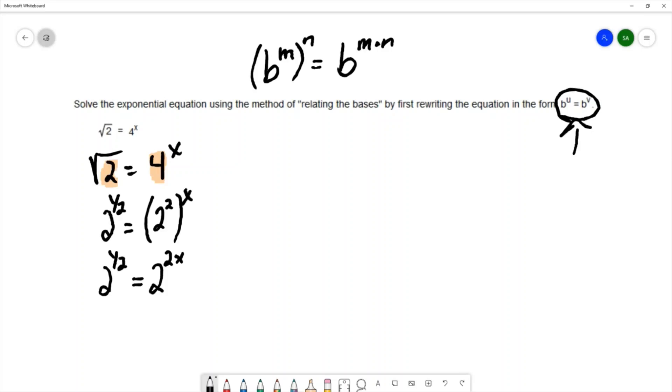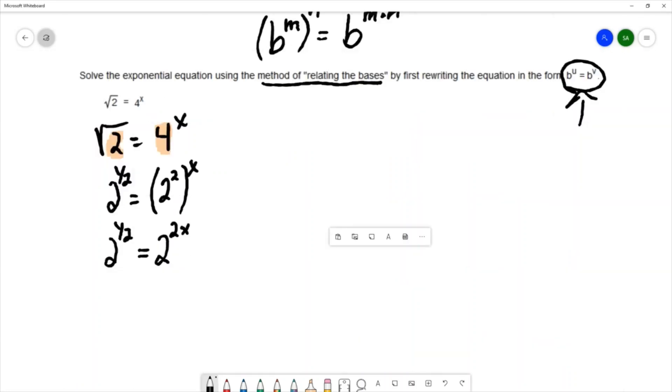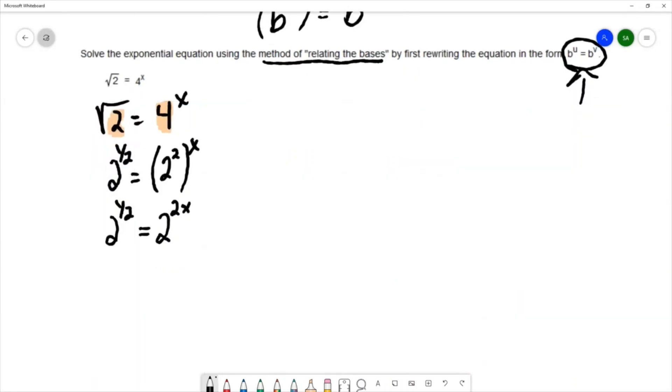So now I've written the equation in this format where the bases are the same on both sides. And I'm going to use the method of relating the bases, sometimes it's also called the one to one property. And with that, what the relating the bases or one to one property says is